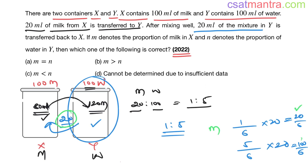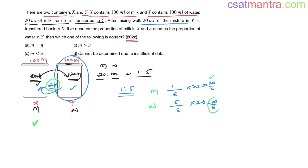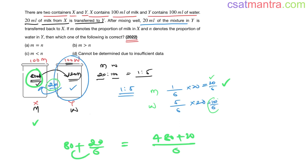Now milk in X will be 80 plus 20/6, which equals 480/6 plus 20/6 = 500/6. This value is referred to as m, which denotes the proportion of milk in X.